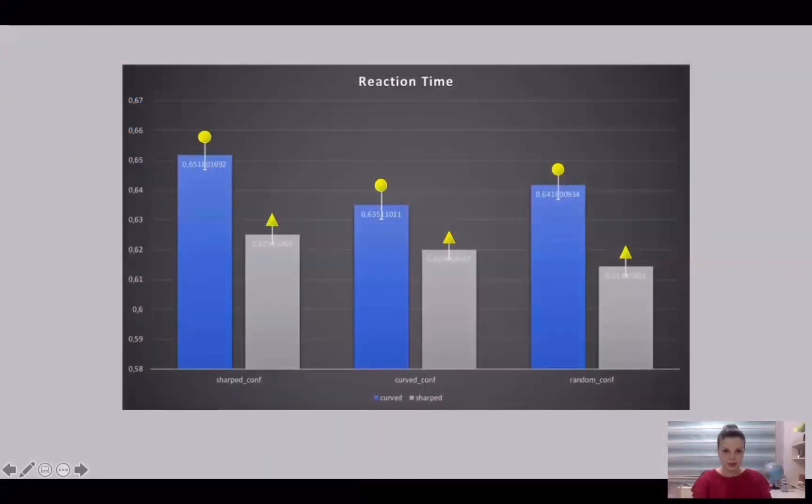As in the first experiment, sharp-edged trials, the gray ones, were responded to faster than curved-edged ones. And a new finding from the reaction time analysis revealed that random and curved-edged configural trials were responded to faster than sharp-edged ones. Also, there was an orderly interaction.